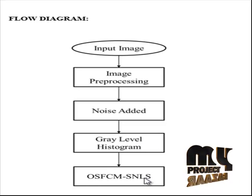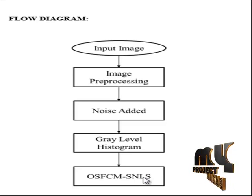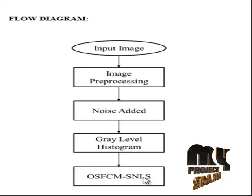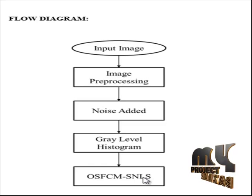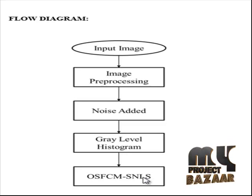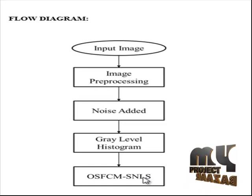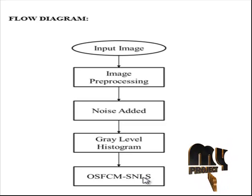The OSFCM-SNLS algorithm is proposed for our gray level histogram image. In the segmentation result of SFCM, most noise in the image background is removed, but noise in the region of interest is still retained. The segmentation results of enhanced FCM and FGFCM are better than the two former methods, but some noise pixels still exist. In contrast, image noise is removed cleanly in the result of OSFCM-SNLS, which obtains the best visible effect among all methods.